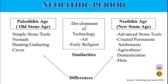The compare and contrast chart shows the big differences between the Paleolithic Age and the Neolithic Age. In the Paleolithic Age, there were simple stone tools, nomads, hunting and gathering, and caves. On the other hand, the Neolithic Age had advanced stone tools, permanent settlements, agriculture and domestication, and huts.